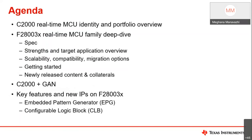In terms of the overall agenda we'll be covering today, we would like to start with really what is our DNA, who we are, and where we are heading from a C2000 standpoint. Then jumping into the specific F28003X device family for a deep dive on the spec, migration, target applications, and getting started. We'll also cover C2000 plus GAN, and finally discuss key new IPs: the embedded pattern generator (EPG) and the configurable logic block (CLB).